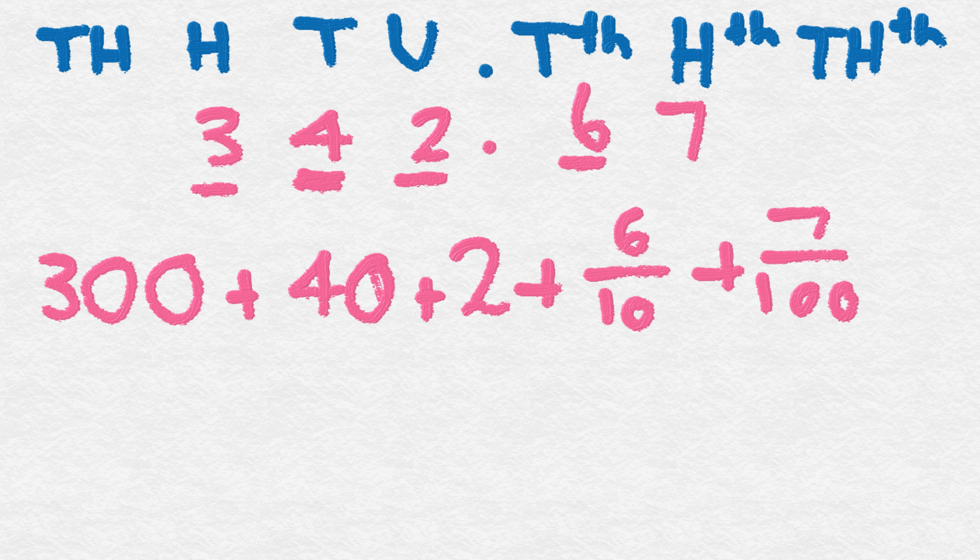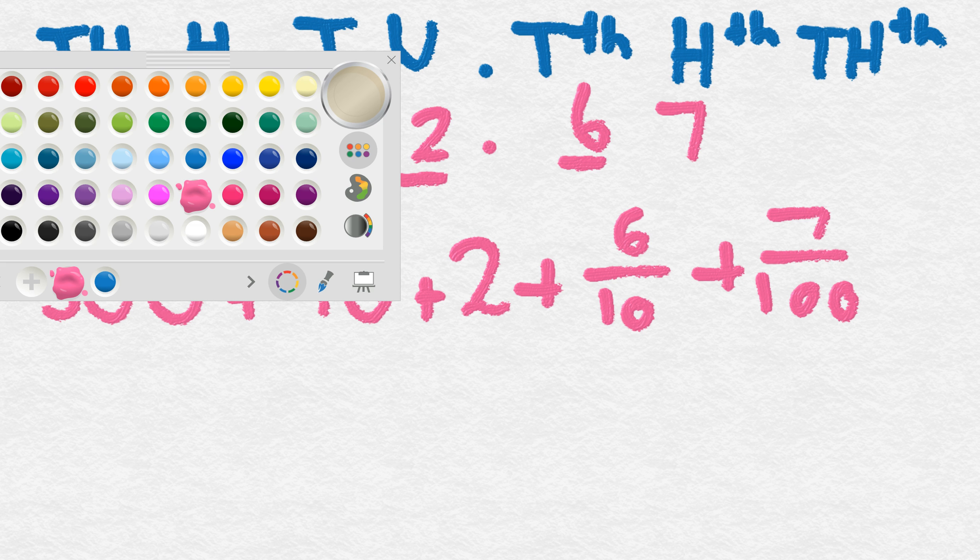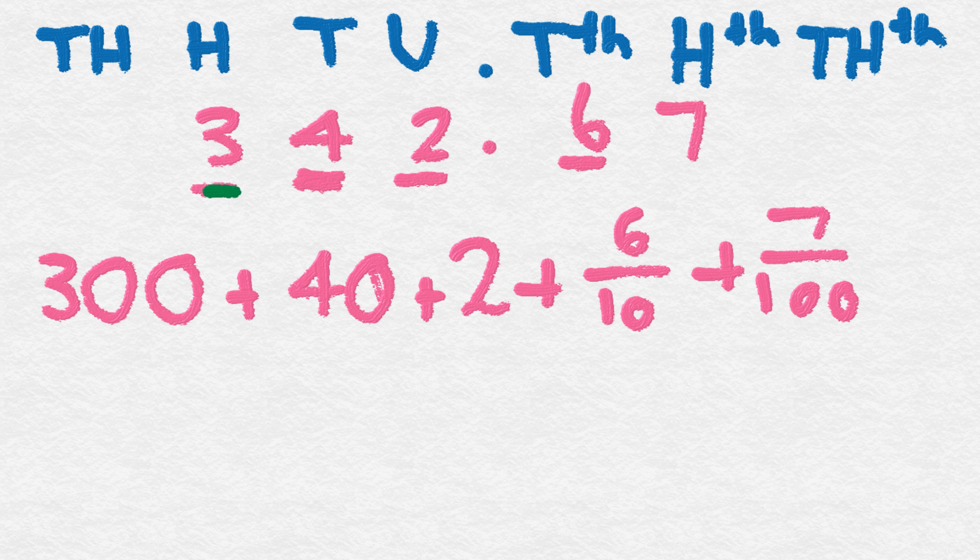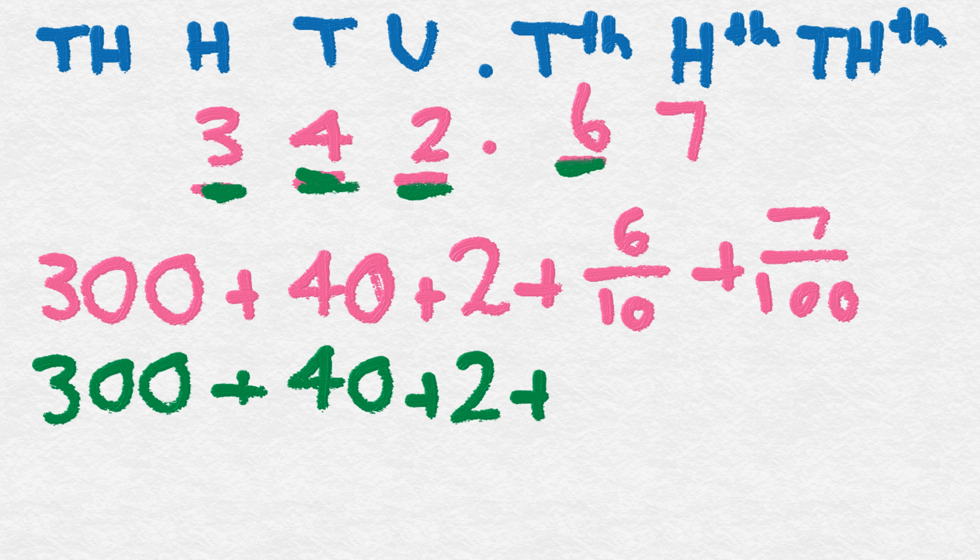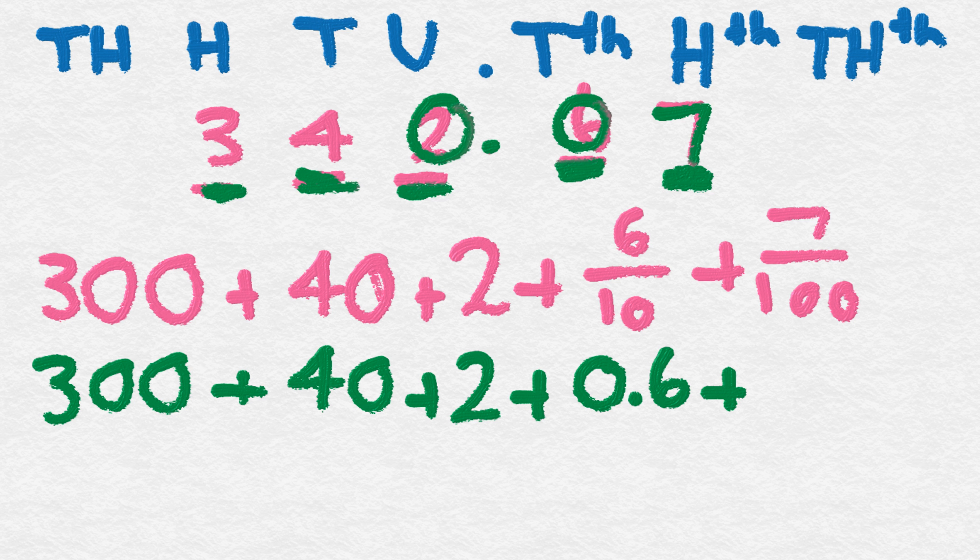Now we've expanded it with the fractions. Now let's have a look at doing the same thing, this time using the decimals. So we have 300 plus 40 plus 2 units, plus here we've got no wholes, and in our tenths column we have 6, plus now we're looking at the hundredths. So we're going to just focus on the 7. So we've got no here, none there, and 7. So it becomes 0.07.